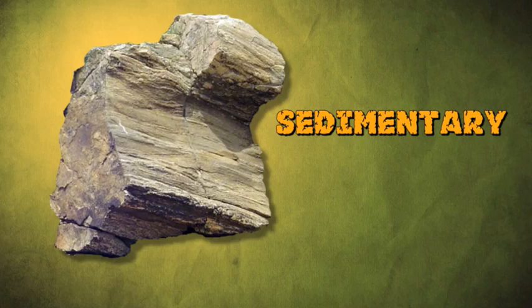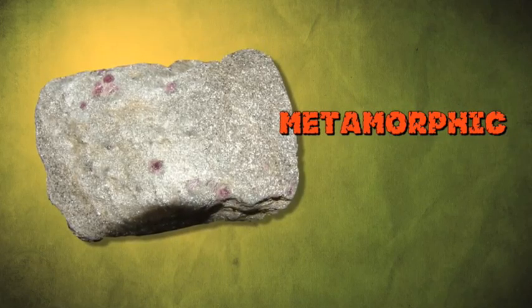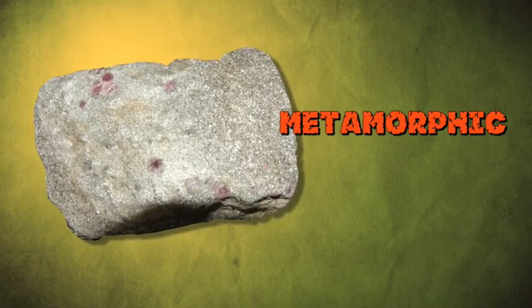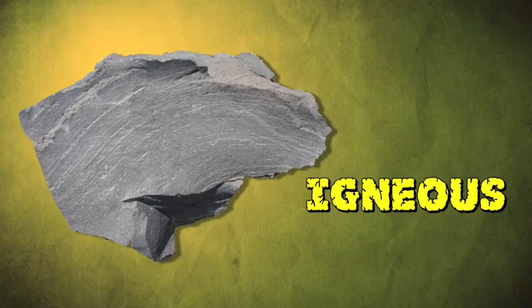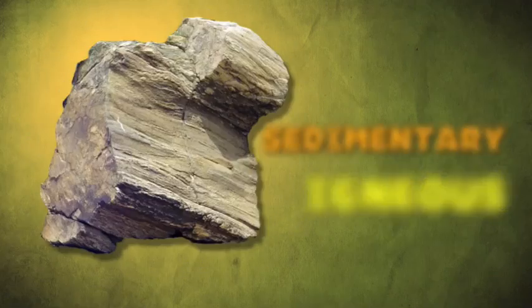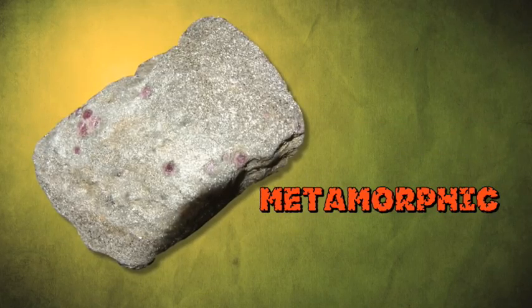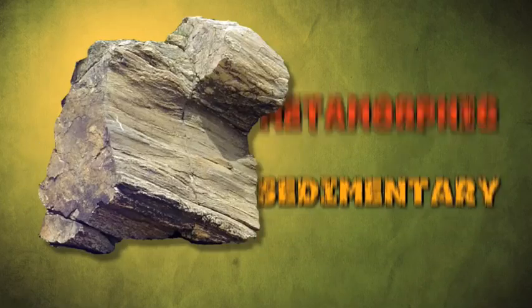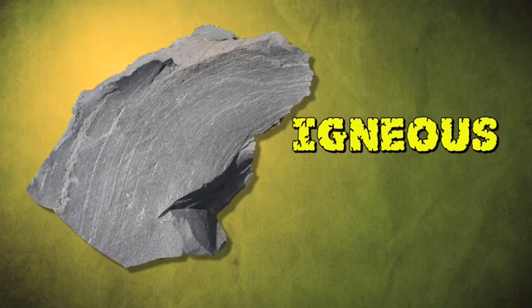As conditions on Earth change, rocks may change from one type to another. Sedimentary rocks can change into metamorphic rocks, or if they melt, into igneous rocks. Igneous rocks can change into sedimentary or metamorphic rocks, and metamorphic rocks can change into sedimentary or igneous rocks.